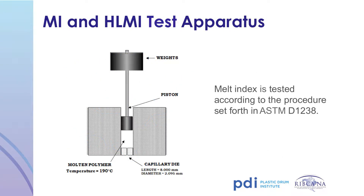This is an illustration of the apparatus used to test the melt index of polyethylene resin. The test is conducted in accordance with standard ASTM procedures. It begins by loading the resin into a testing chamber held at 190 degrees centigrade to melt the resin. A calibrated weight of 2.16 kilograms is added to the test piston, which pushes the melted resin through a capillary die of a specific diameter. The amount of resin that flows through the orifice during a specified time period is weighed and recorded, expressed in grams per 10 minutes.